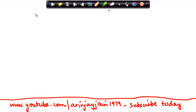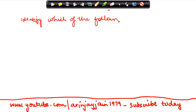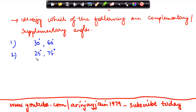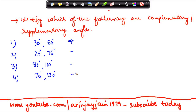We need to identify which of the following are complementary or supplementary angles. Let me change the color. Pair 1: 30° and 60°. Pair 2: 25° and 75°. Pair 3: 80° and 110°. Pair 4: 70° and 120°.